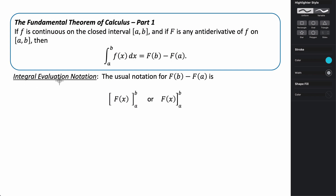A couple of quick notes on notation: for F(b) minus F(a), you'll often see it written with two square brackets with b and a as the upper and lower limits, or you might just see one-ended brackets with the function written from a to b. This means you plug in the upper limit first and then subtract the lower limit from it.